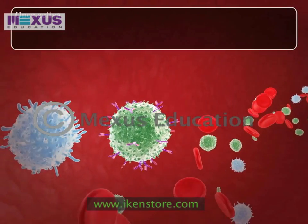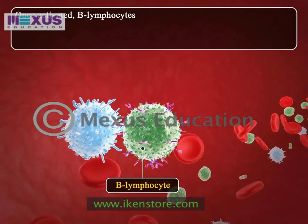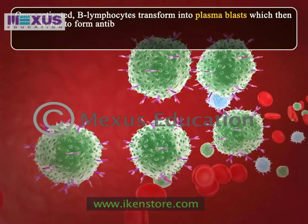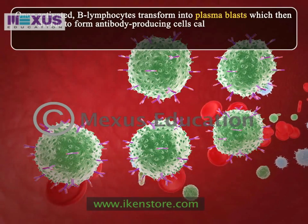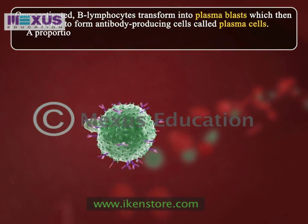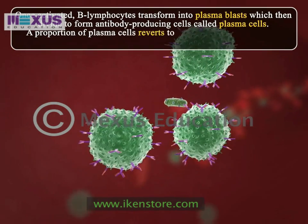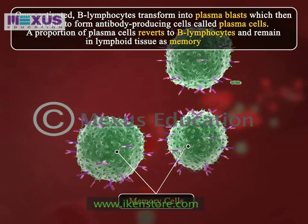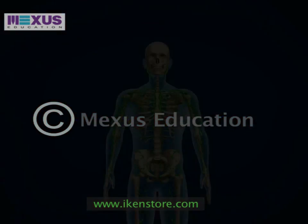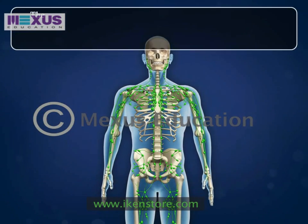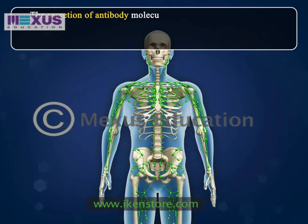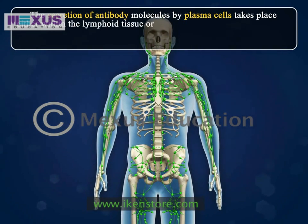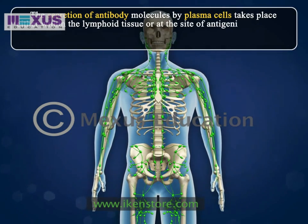Once activated, B lymphocytes transform into plasmablasts, which then divide to form antibody-producing cells called plasma cells. A proportion of plasma cells reverts to B lymphocytes and remains in lymphoid tissue as memory cells. The secretion of antibody molecules by plasma cells takes place either within the lymphoid tissue or at the site of antigenic stimulation.